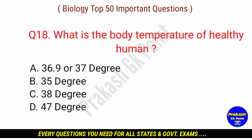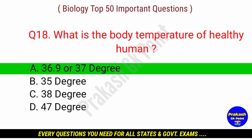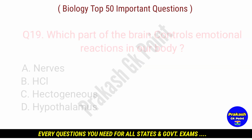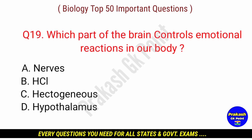Next question: what is the body temperature of a healthy human? Answer: option A — 37 degrees. Which part of the brain controls emotional reactions in our body?